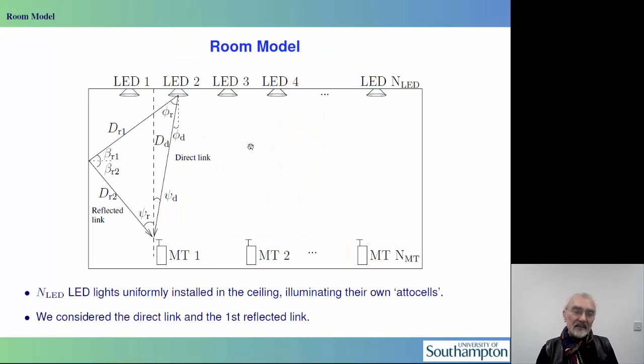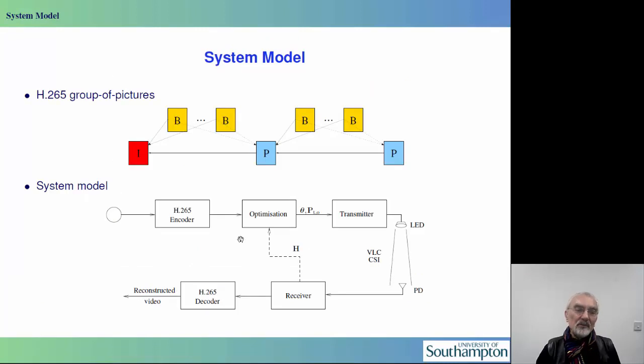Let's look at a simple indoor scenario. Our room model is constituted by a number of LED arrays on the ceiling, and we could fix the coordinate point zero somewhere in the middle of the room. We would consider a direct line of sight link as well as a single reflected path, and the users can move around in a lab-like environment or in the home and receive video on the move.